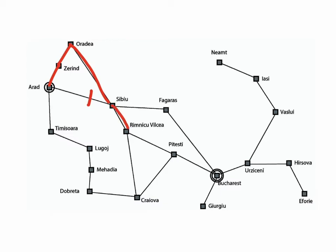We keep exploring new places until we again reach either a dead end or a place that already occurred along the path, at which point we backtrack until we reach a place where we have an alternative direction to explore.